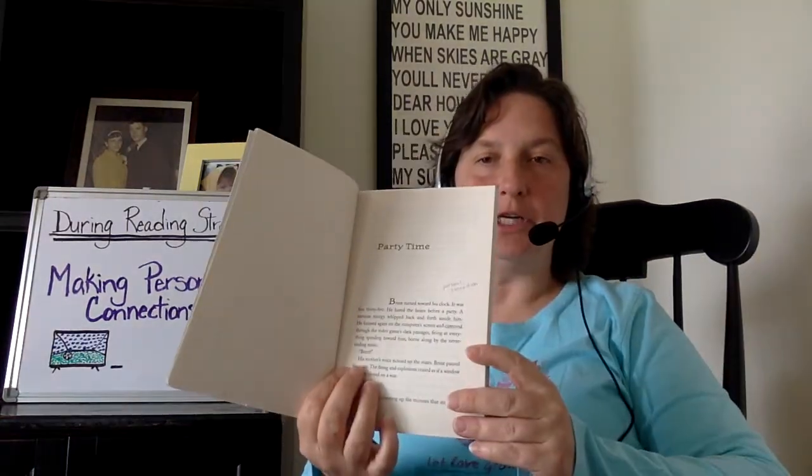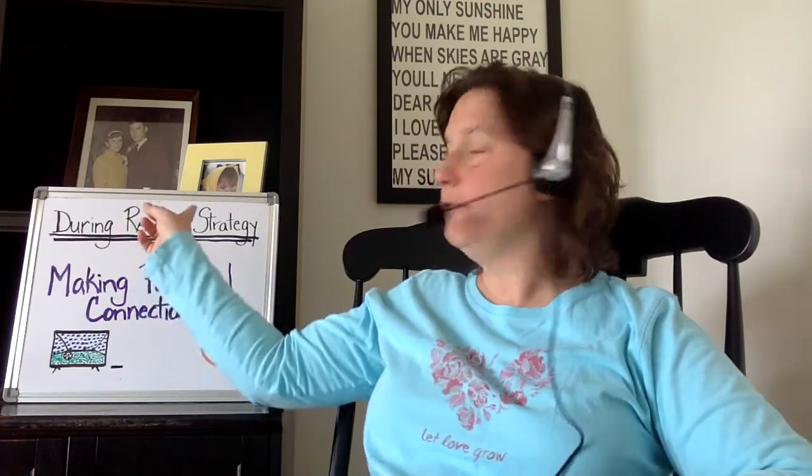Hello, everyone. So today I am going to read our Whirligig book and start with a chapter called Party Time. There will be times when I'm going to ask you to lightly underline or circle something, so if you could please have a pencil nearby, that would be fantastic. Today I am going to demonstrate the during-reading strategy of making personal connections.